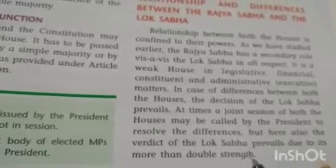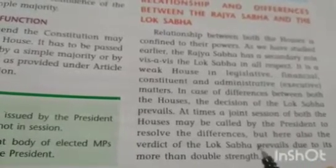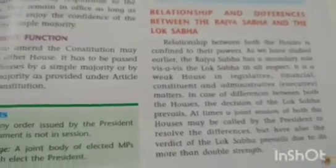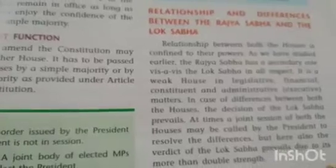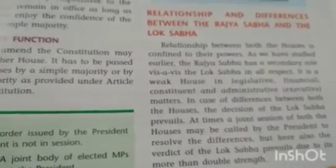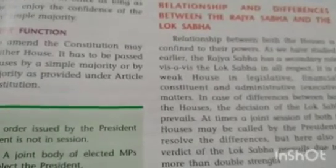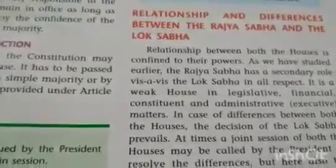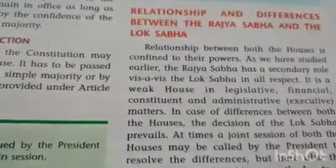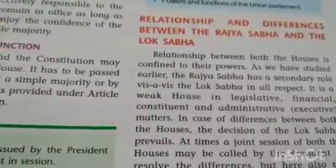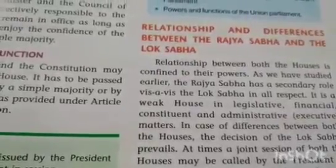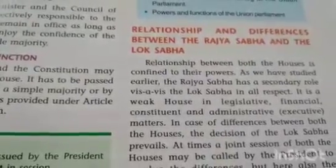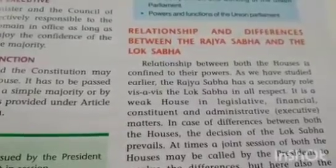Whenever there is a joint session or deadlock, the decision of Lok Sabha prevails because the membership strength of Lok Sabha is double that of Rajya Sabha. Though in some matters, both Lok Sabha and Rajya Sabha enjoy co-equal powers — such as election of the President, election of the Vice President, removal and impeachment of the President, Vice President, and judges of Supreme Court and High Courts.